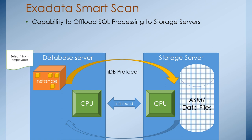Smart Scan works in three functionalities: one is predicate filtering, the second is column projection, and the third is join filtering. We will review these one by one.